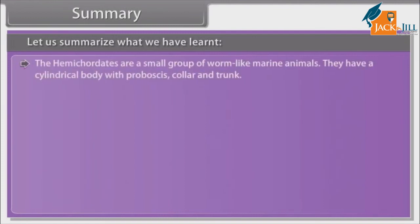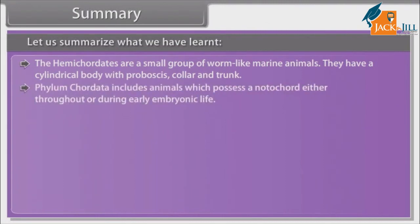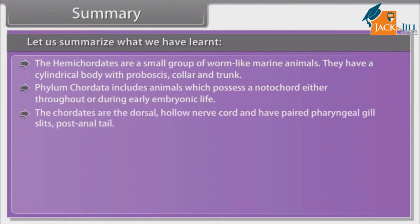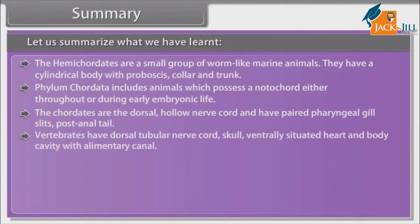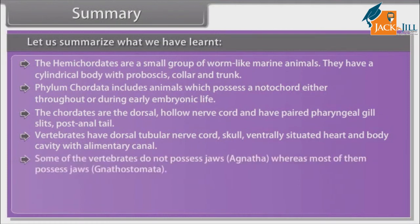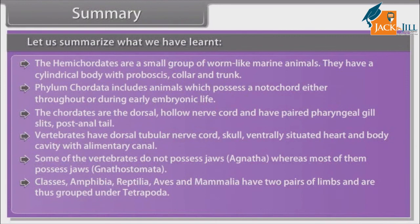Hemichordates are a small group of worm-like marine animals with cylindrical body having proboscis, collar and trunk. Phylum Chordata includes animals which possess a notochord either throughout or during early embryonic life, along with a dorsal hollow nerve cord and paired pharyngeal gill slits and a post-anal tail. Vertebrates have a dorsal tubular nerve cord, skull, ventrally situated heart and body cavity with alimentary canal. Some vertebrates do not possess jaws — Agnatha — whereas most possess jaws — Gnathostomata. Classes Amphibia, Reptilia, Aves and Mammalia have two pairs of limbs and are grouped under Tetrapoda.